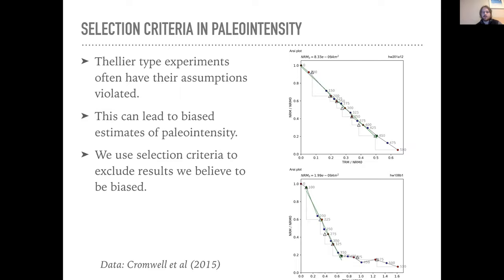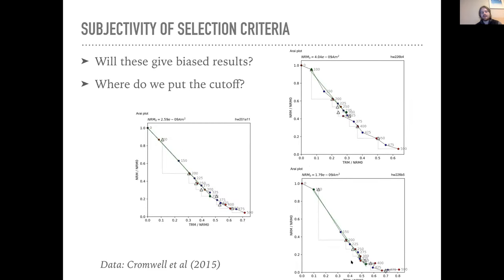This approach is problematic because it's subjective. I'm going to show three examples of plots where curvature could be an issue and could lead to biased paleo intensity results. Whether it's appropriate to select parts of the Arai plots for analysis is not always clear, and different labs using different sets of criteria might exclude or accept these specimens depending on who you ask. Where do we put the cutoff? This is a very subjective problem, and it frustrated me when doing these experiments.